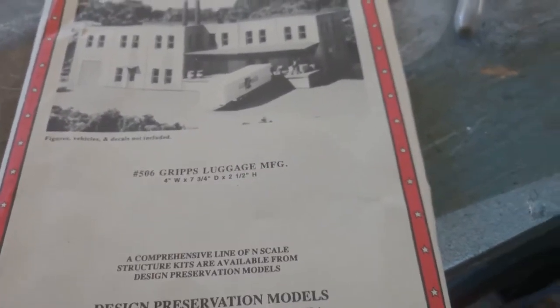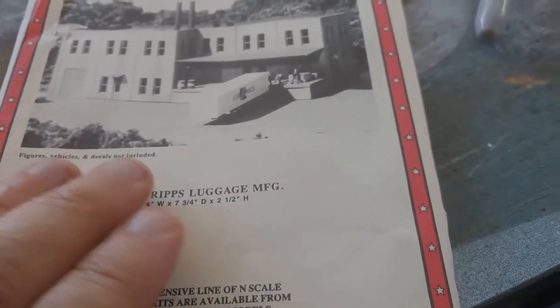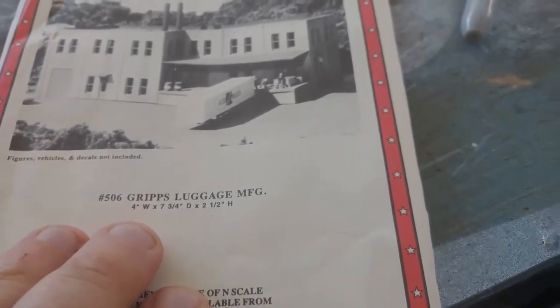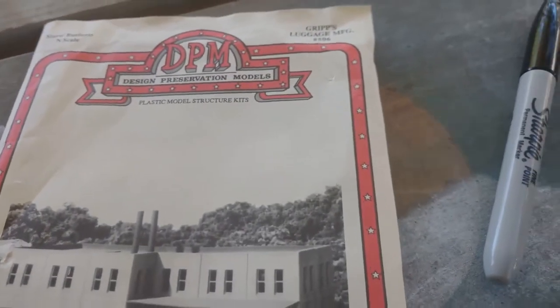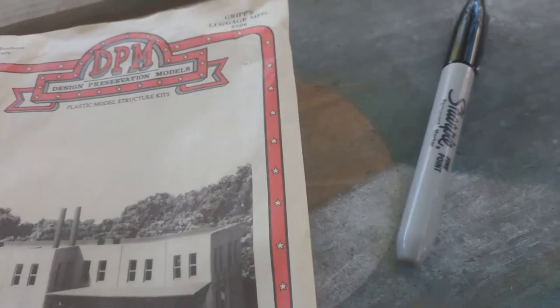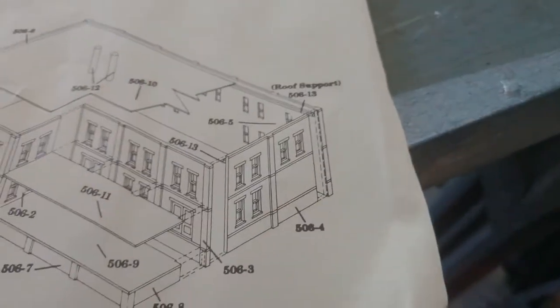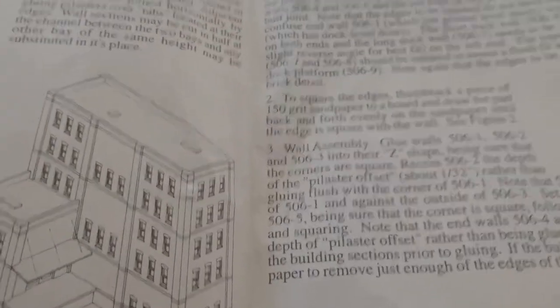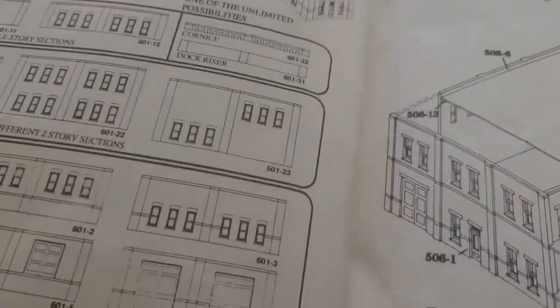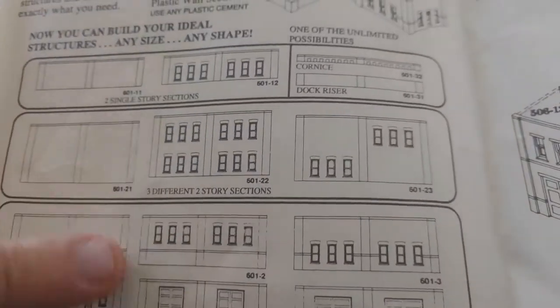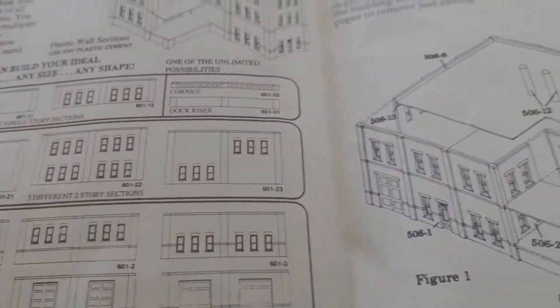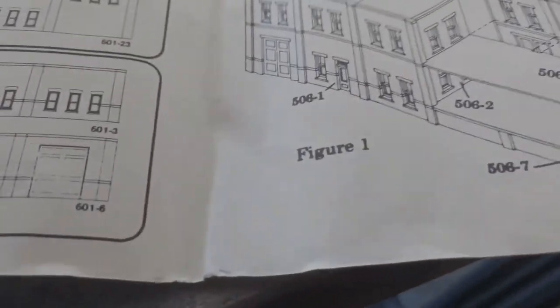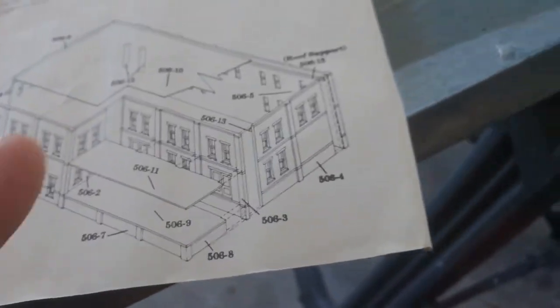Here's the instruction booklet that came out of the kit, the Grips Luggage Design Preservation. In reality there's a little bit of lacking in the instructions. Some of these pieces don't exactly look like the parts in the kit, plus the numbers don't quite match up.